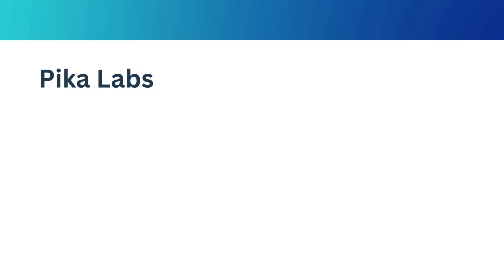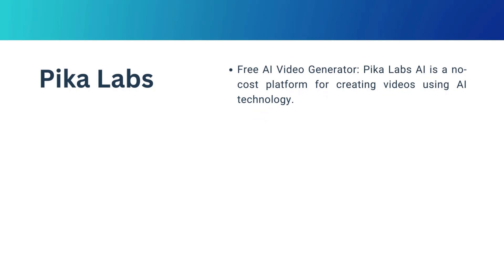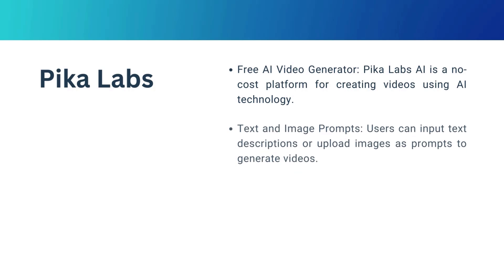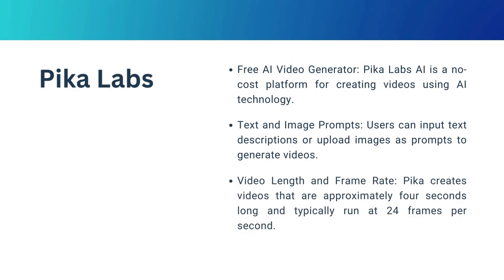PicaLabs AI contains the following features. Free AI video generator: PicaLabs AI is a no-cost platform for creating videos using AI technology. Text and image prompts: users can input text descriptions or upload images as prompts to generate videos. Video length and frame rate: Pica creates videos that are approximately four seconds long and typically run at 24 frames per second.